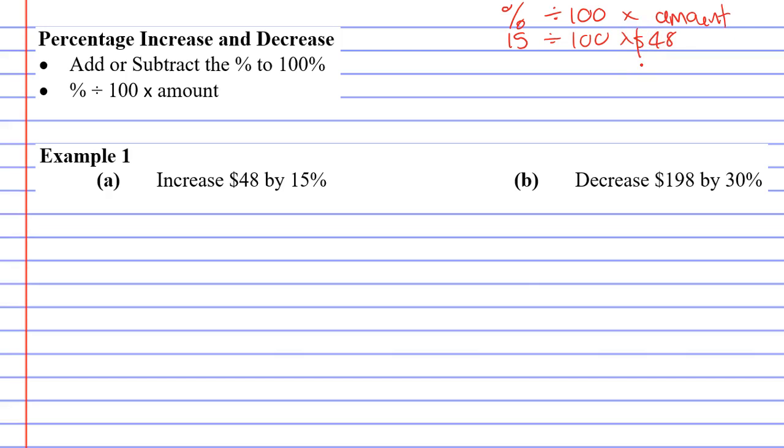Now if I do that, 15 divided by 100 times 48, I get 7.2 or $7.20.